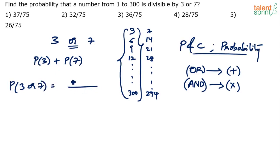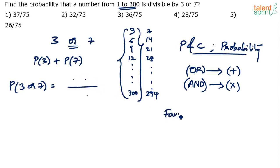What is probability? Number of favorable cases divided by total number of cases. I have to choose a number from 1 to 300. What is the probability that the number is either divisible by 3 or divisible by 7 — that is, a multiple of 3 or a multiple of 7? In how many ways can you choose a number between 1 to 300? In 300 ways. I have to choose one number from 1 to 300, which can be done in 300 ways.